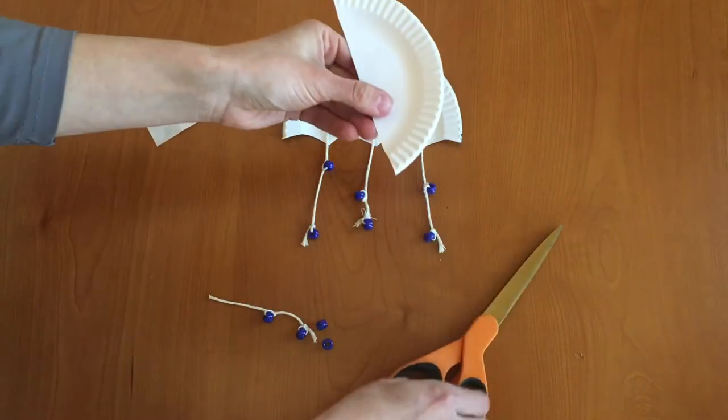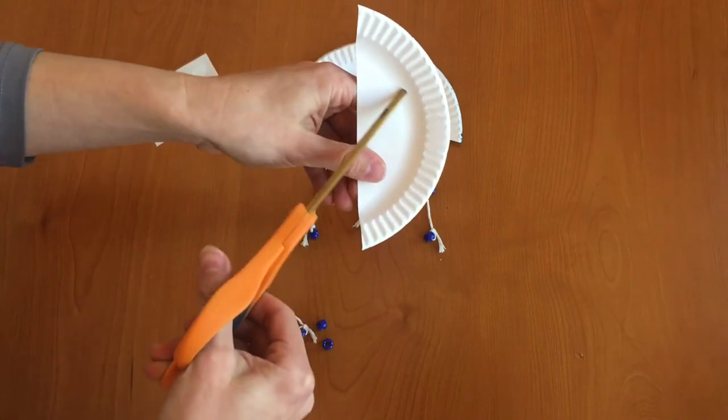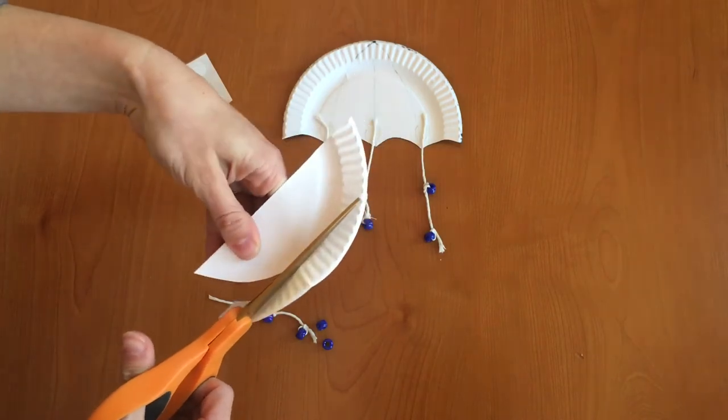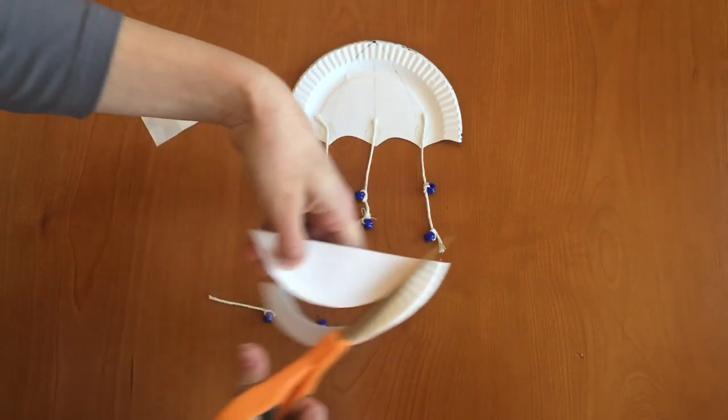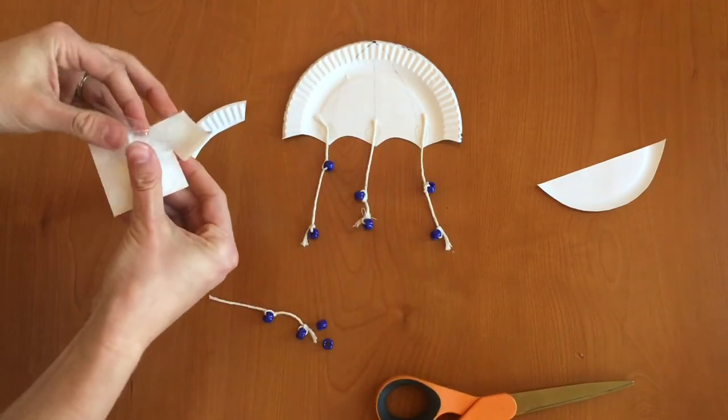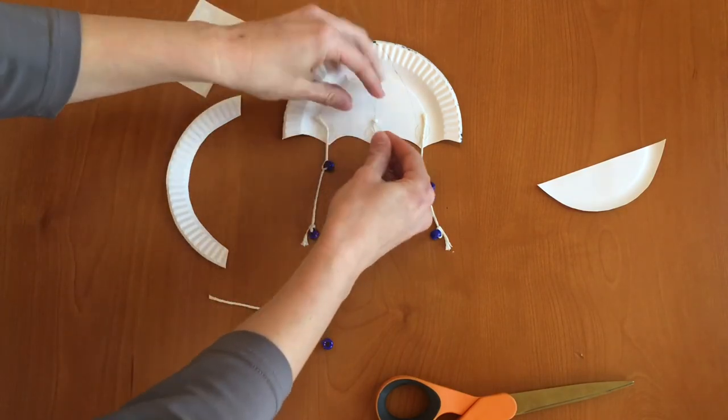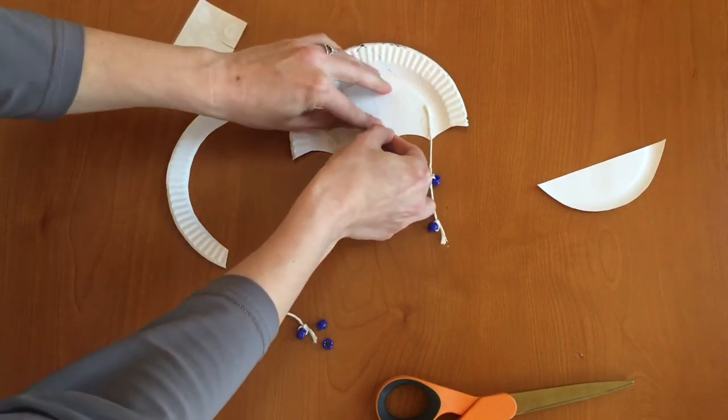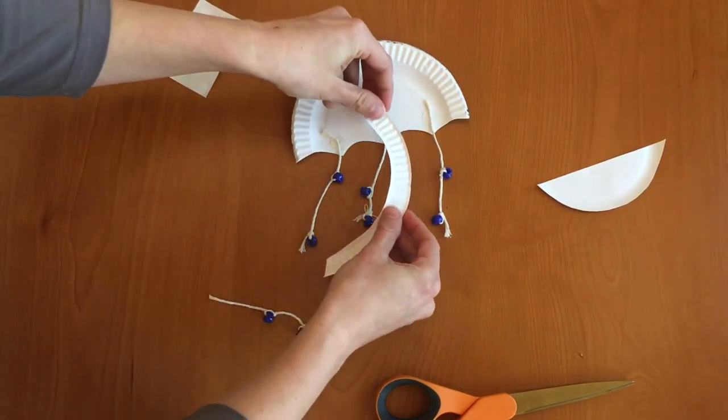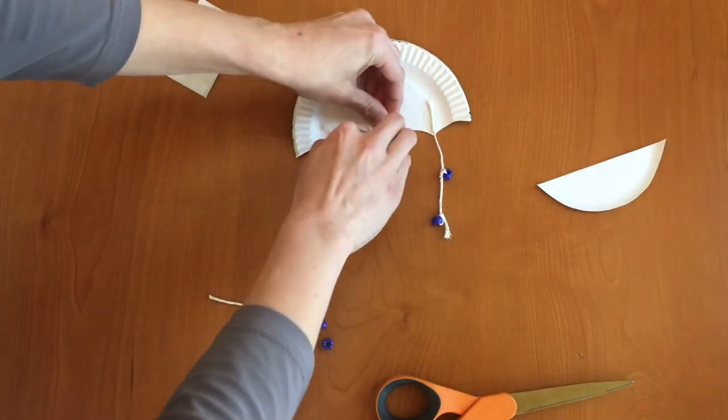We're going to now cut out just the outside rim of your bottom part of that paper plate and that's going to become the handle for your umbrella. So you can color this in and decorate it if you want. I'm not going to. But what we do next is take one more glue dot and just put it right on top of that center string. And we're going to take the curved paper plate and we're just going to press it onto there for our handle.